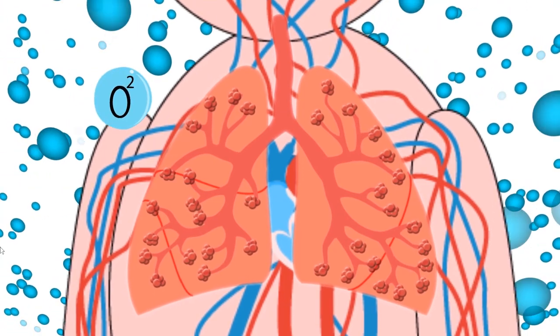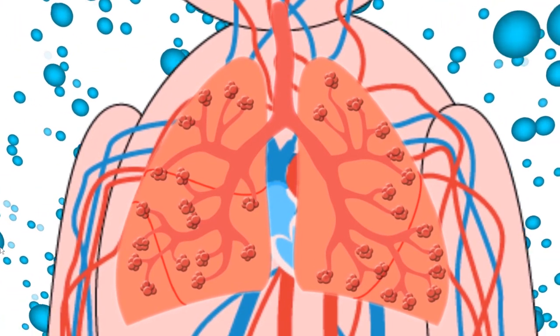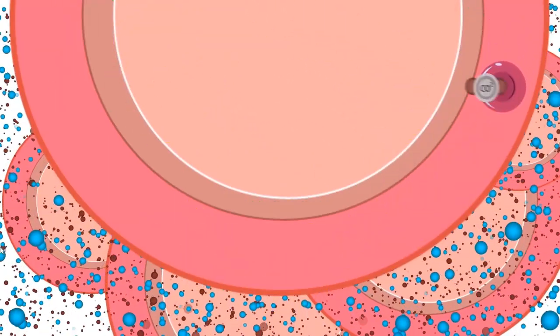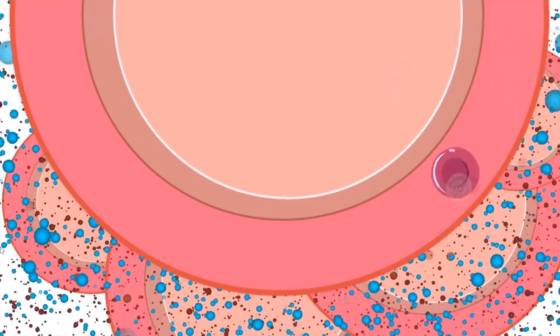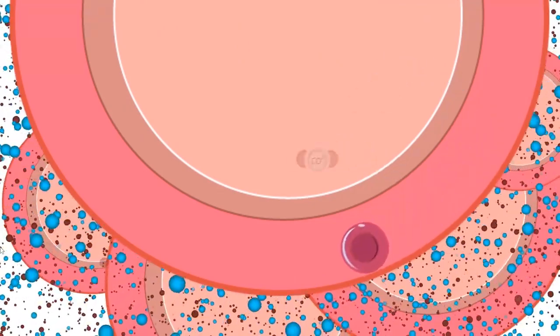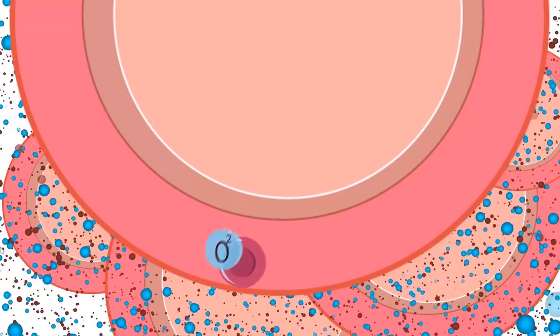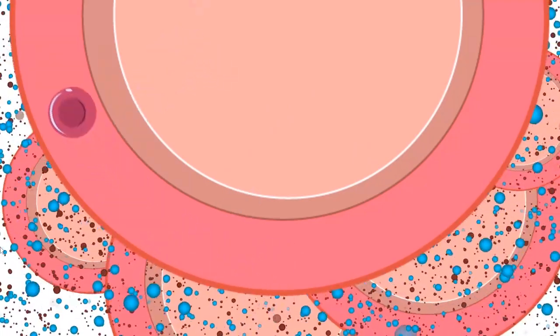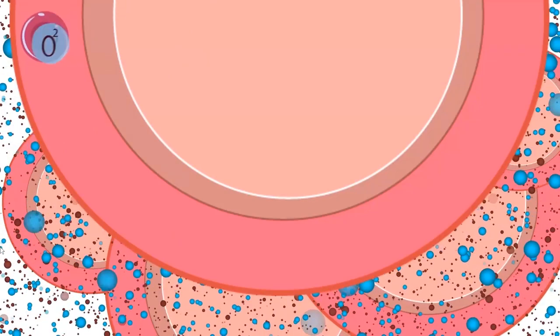Inside these lungs are alveoli. This alveoli contains capillary where there is an exchange of gases like carbon dioxide and oxygen. So inside of that, the blood will now give off the carbon dioxide and will receive oxygen. Thus, this blood will become oxygen-rich blood.